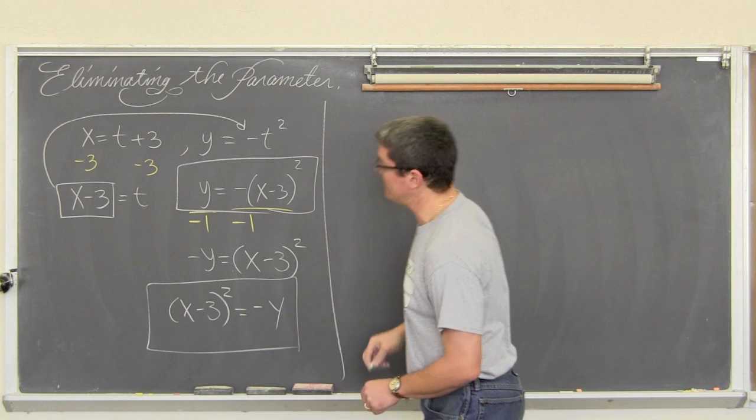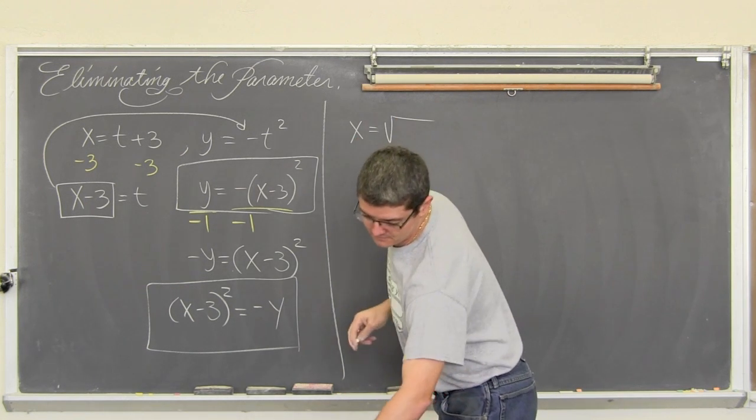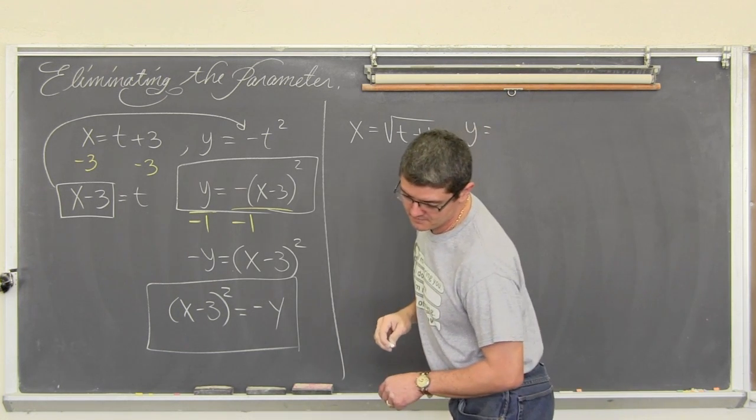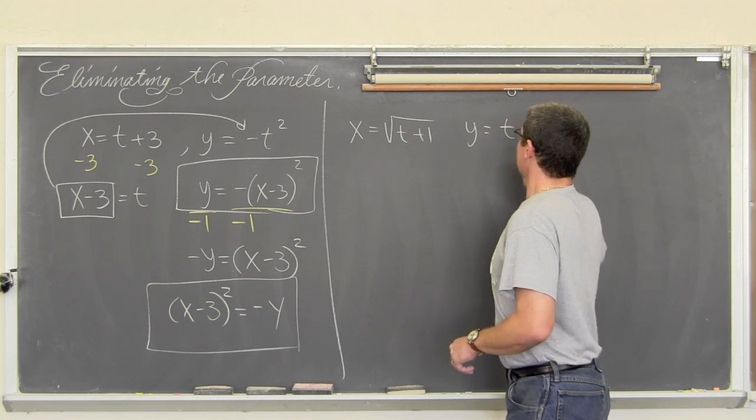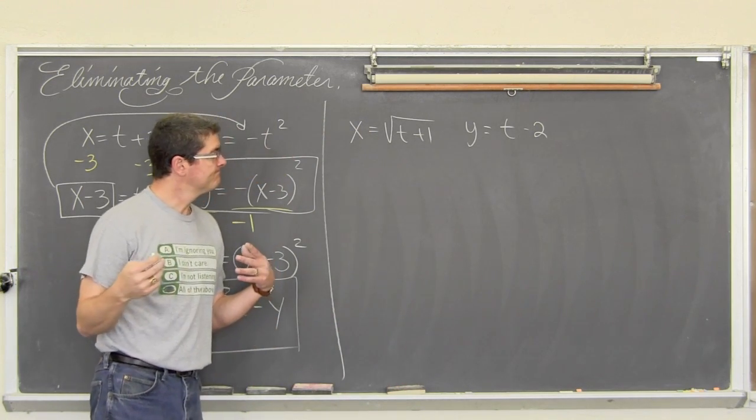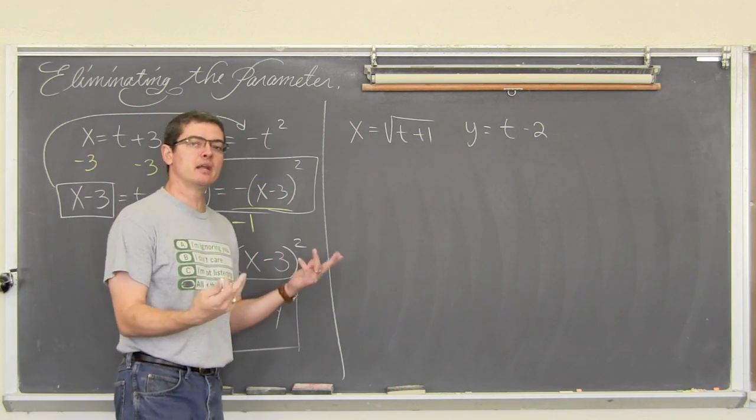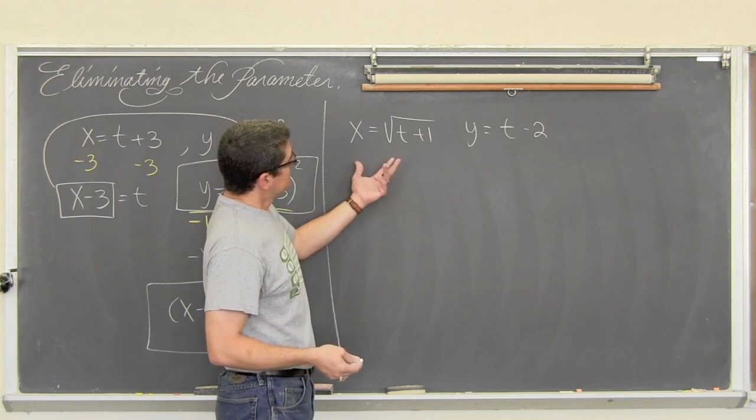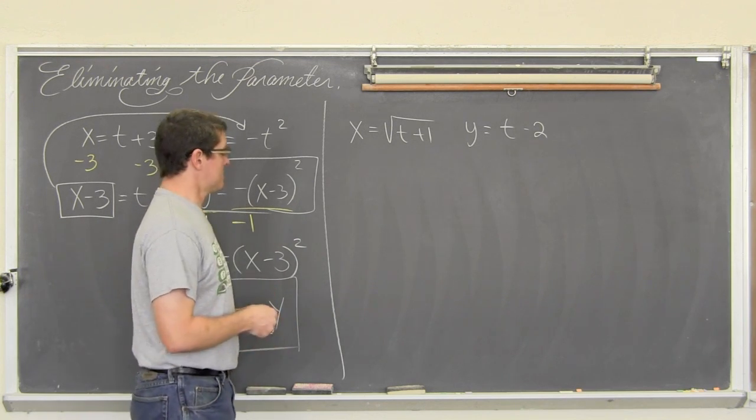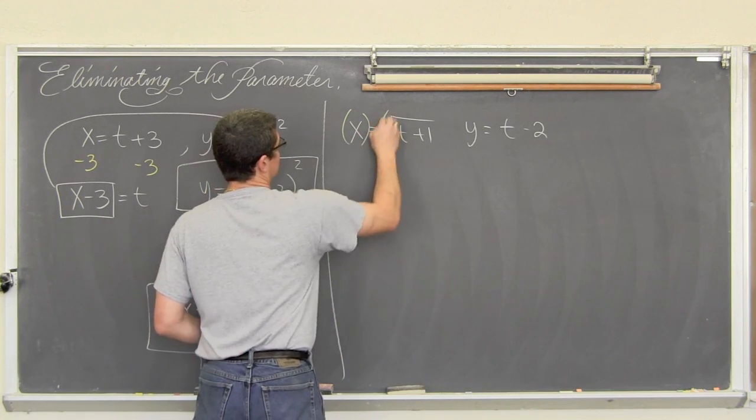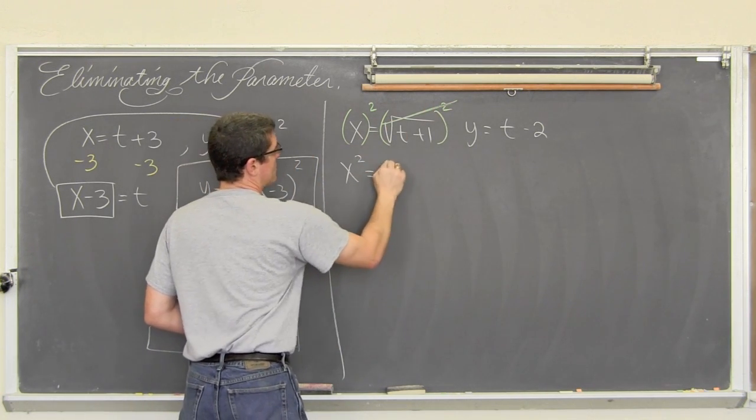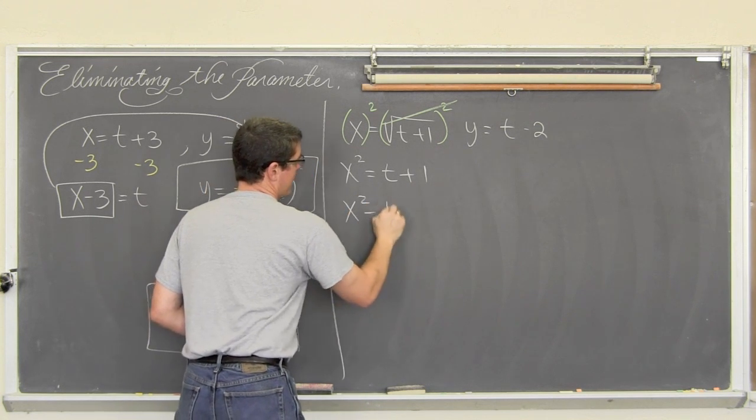Our next example is going to be x equals the square root of t plus 1. And then over here we have y equals t minus 2. So we want to eliminate the parameter. Again, you can do the substitution anywhere you like. I am kind of getting stuck on the idea of having y in terms of x. So I am going to take this equation and I am going to square both sides to get rid of the square root. And we get x squared equals t plus 1 and x squared minus 1 equals t.